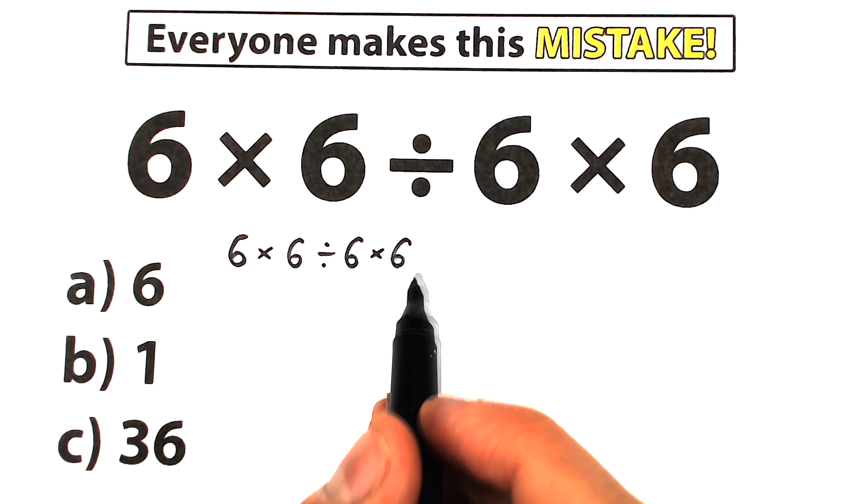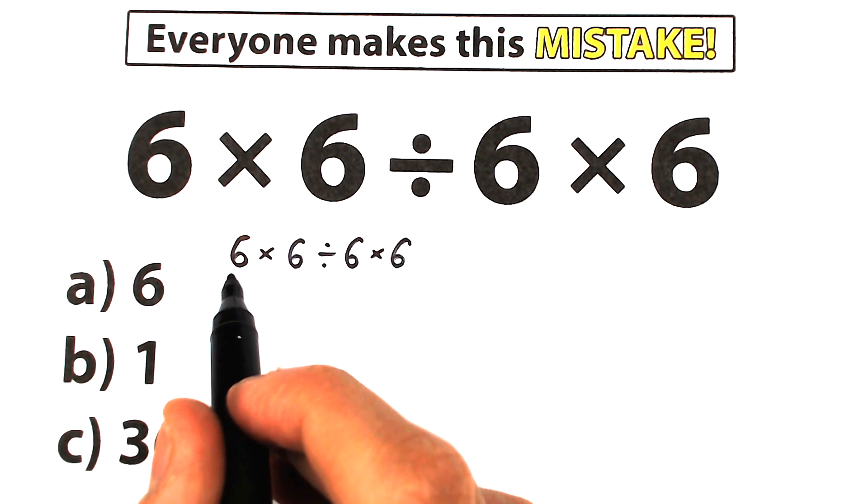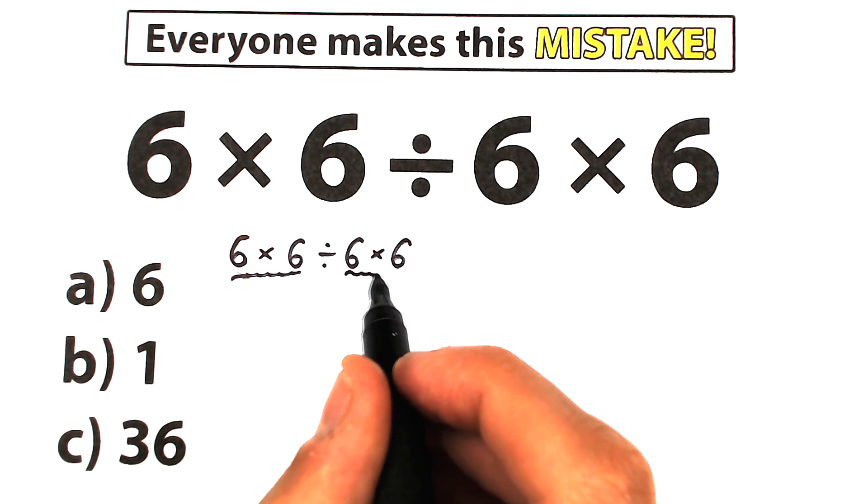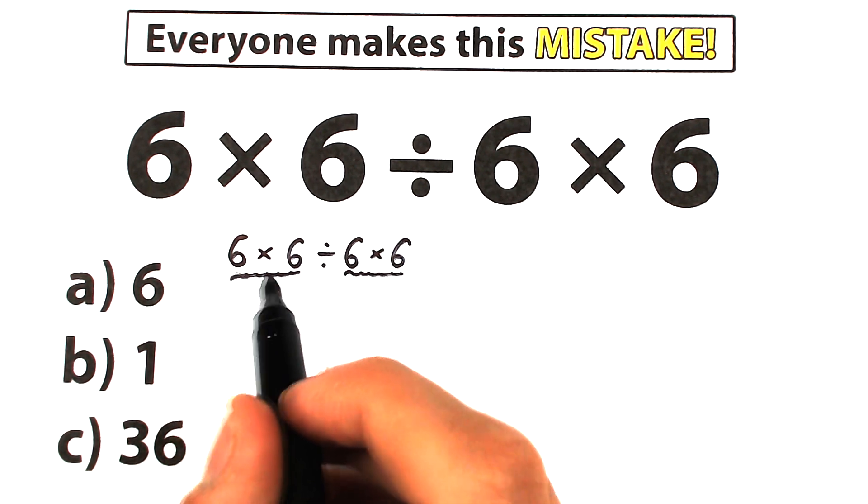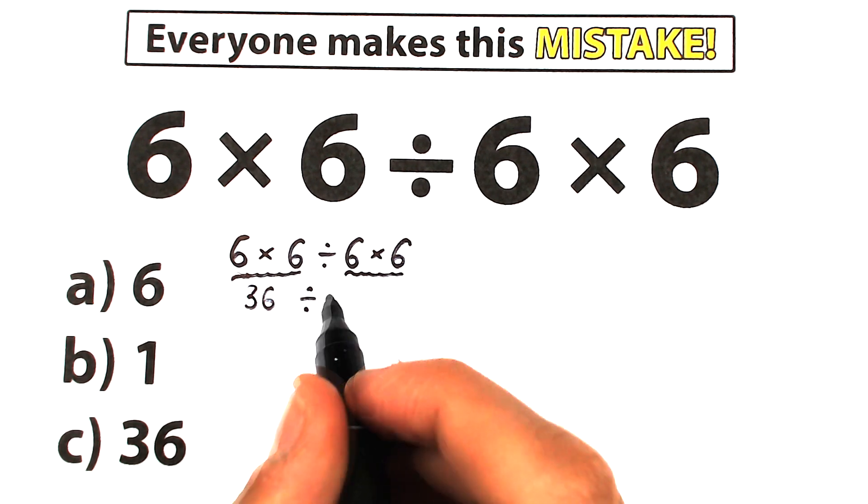So first of all, take a look closely at our challenge. We have 6 times 6 divided by 6 times 6. On the left-hand side, we have this multiplication, and we have the same multiplication on the right-hand side. So if we look closely, 6 times 6 equal to 36, and we have division in the middle, and right here we have the same expression, 6 times 6,